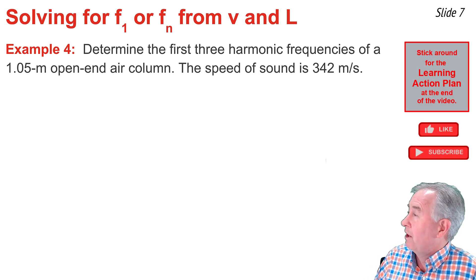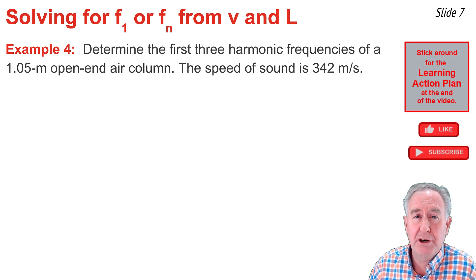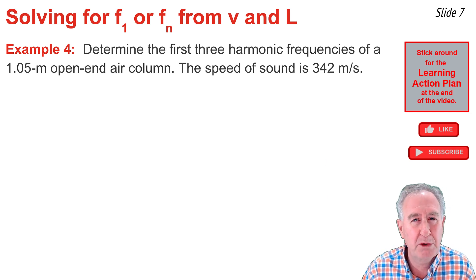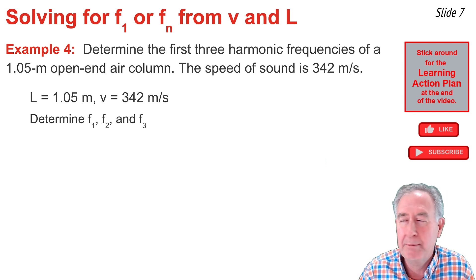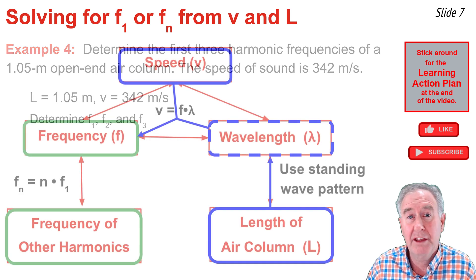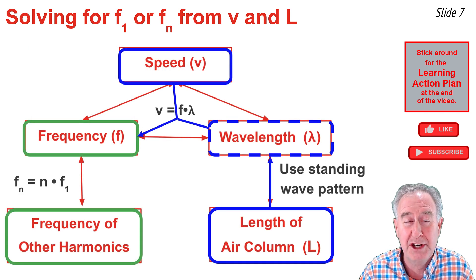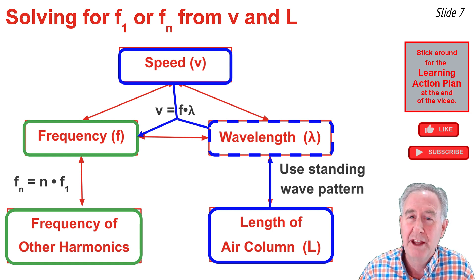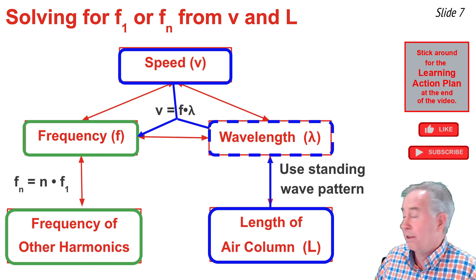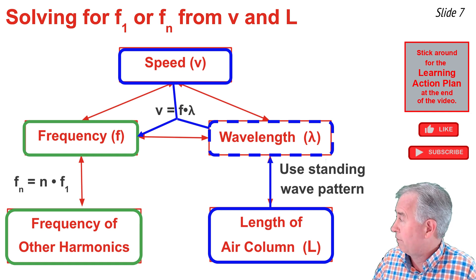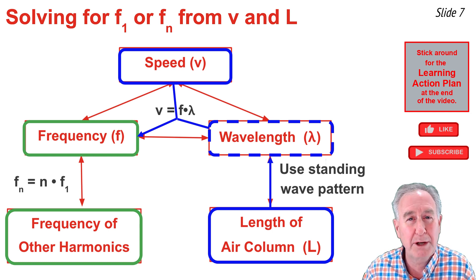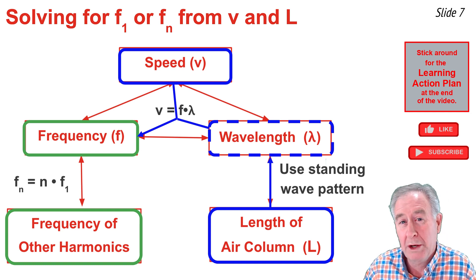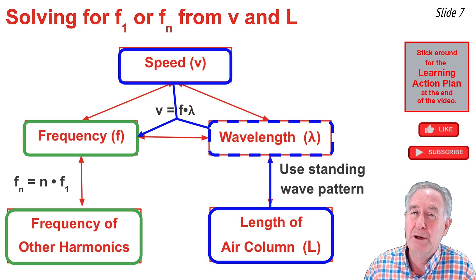In Example 4, the length of an open-end air column is 1.05 meters and the speed of sound is 342 m/s. I'm looking to calculate the frequency of the first, second, and third harmonic. I write down the givens and unknowns, then use the graphic organizer to plan a strategy: I can find the wavelength from the length, then use v = f × lambda to calculate the frequency of the first harmonic, and finally use fn = n × f1 to find all harmonics.